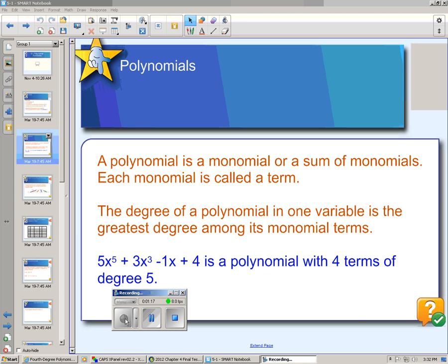A polynomial is when you have just a single monomial, or you can take several monomials and add them together. Each monomial within the polynomial is called a term. So down here on the bottom we have this example with four monomials put together, so this has four terms.